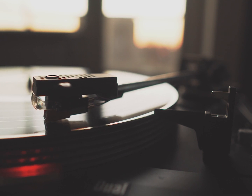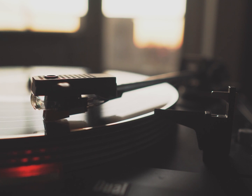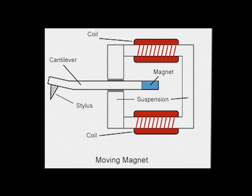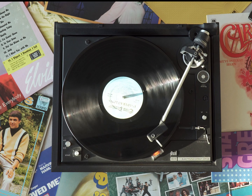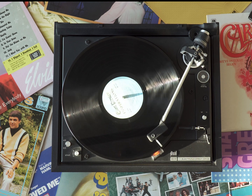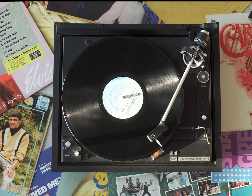Analog technology is immune to EMP. This record player, for example, creates music by running a needle through a series of grooves. The resulting vibrations run up the arm and into the cartridge, agitating a magnet held between two wire coils. According to Faraday's law, this creates a flux which generates currents that can be transduced into sound. Nowhere in this technology are semiconductors, logic gates, or other easily overloaded elements of a digital circuit. It will continue playing as soon as the EMP passes by.